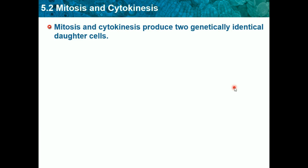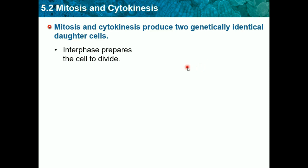Mitosis and cytokinesis produce two genetically identical daughter cells. There are two types of cell division: mitosis and meiosis. They're hard to remember because they both involve cell division and sound similar. A good way to remember: mitosis has the words 'my' and 'toe' in it. All the cells in your body except sex cells do mitosis, and mitosis produces two genetically identical daughter cells. When they say daughter cells, it just means the product of mitosis.